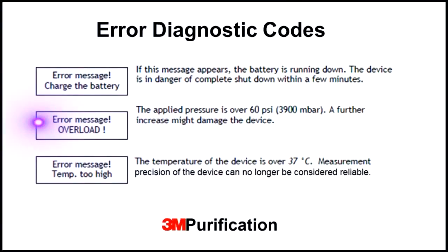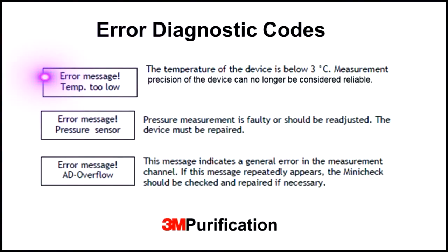One message is an indication that the maximum recommended pressure has been exceeded. Pressure should be immediately reduced or the device disconnected from the pressurized system. Another message is an indication that the maximum recommended device operating temperature has been exceeded. Note the resulting measurements are potentially no longer reliable. Another message is an indication that the pressure measurement yielded by the device is no longer reliable. An additional message is an indication that a measurement error is present. For either of these error messages, contact 3M Purification Technical Support.